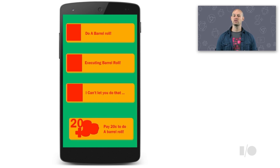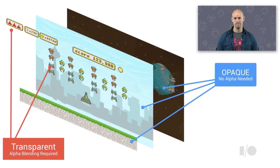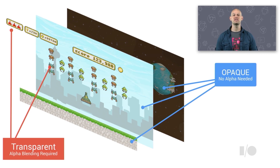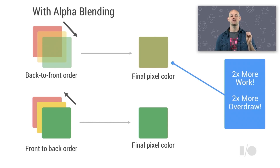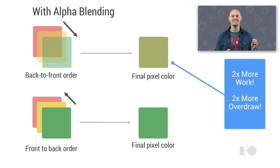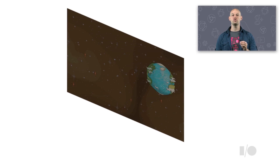Any work you do on a pixel that doesn't contribute to the final scene is wasted work. For 2D games, alpha blending is the single biggest source of overdraw. Generally, a majority of the scene has to be rendered with alpha blending turned on, because those textures use some geometry that have an alpha channel component in them. When you render your objects in your game with alpha turned on, you're forced to render your scene in back-to-front order. This is because during each draw, the alpha operation needs existing pixels in the color buffer to blend against, which increases the number of times a given pixel on the screen gets redrawn. The order in which you draw your game geometry has a profound impact on the performance of your game.